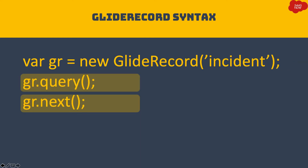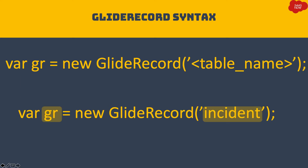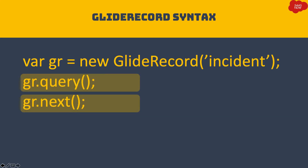Once you have initiated the GlideRecord object, you can call methods of the GlideRecord class. To query records, the method is 'query', called as 'gr.query()' with a semicolon. This will perform a query on the table mentioned in the GlideRecord object parameter — in this case, the incident table. Then you use 'gr.next()' to move to the next record of the table.